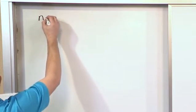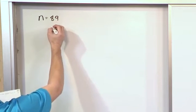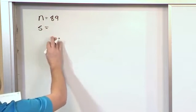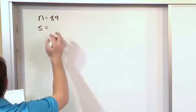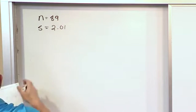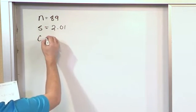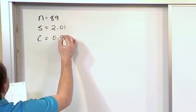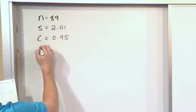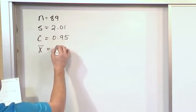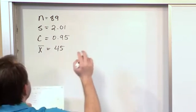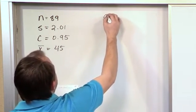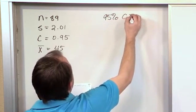The sample size n is 89, the standard deviation of the sample that we brought back was 2.01, the confidence level of the confidence interval that we want to have is 95%, so we say that c is 0.95, and the mean of the samples that we have collected is 45. What we want to construct is a 95% confidence interval for this data.